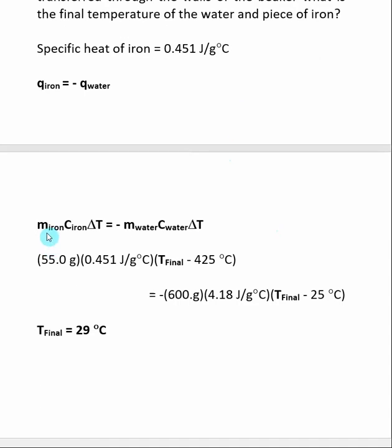And what I do is I set up an MC delta T equation for both species, the iron and the water, and I make sure to include the negative sign in there. If you don't include the negative sign, your answer is going to be way off. I then include the variables. So we had 55 grams of iron. We have the specific heat of iron that was given.